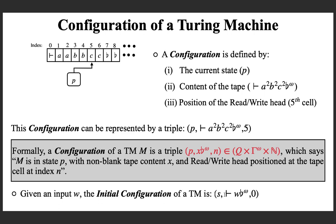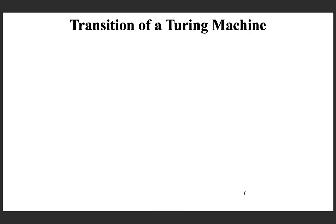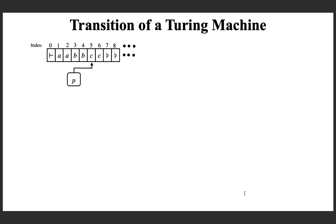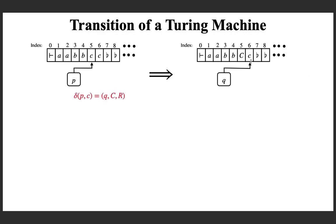The tape content is: left-end marker followed by the input, followed by infinitely many blanks. That is the unique initial configuration for any input W. Now, what is a transition in a Turing machine? Given a configuration, we need a transition for the tape symbol small c when in state small p. This transition says: change state to Q, replace small c with capital C, and move the read-write head to the symbol at index 6. Applying that transition changes the state, replaces the symbol with capital C, and moves the read-write head to the right.